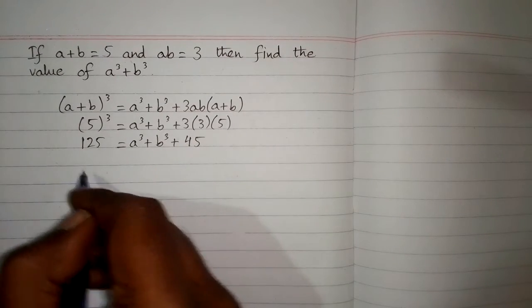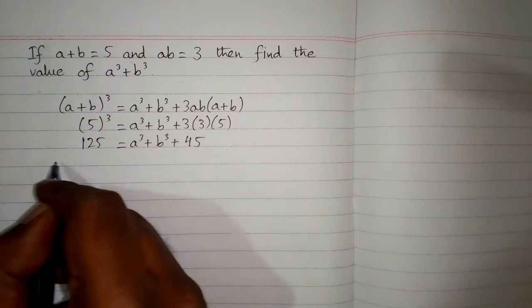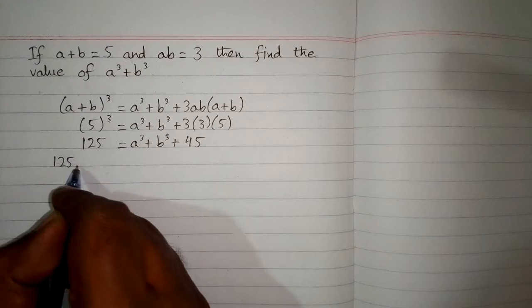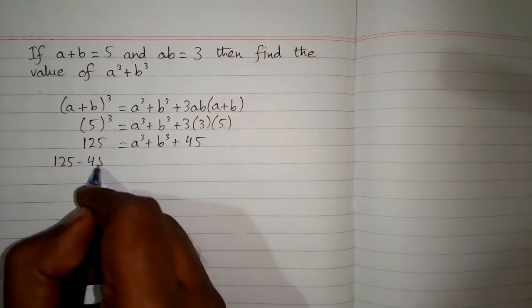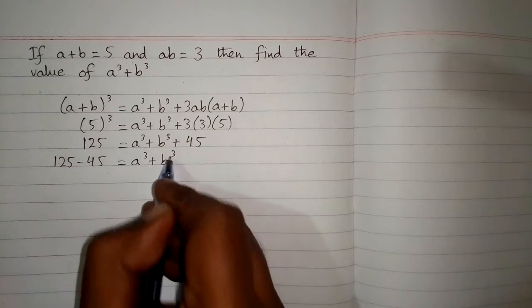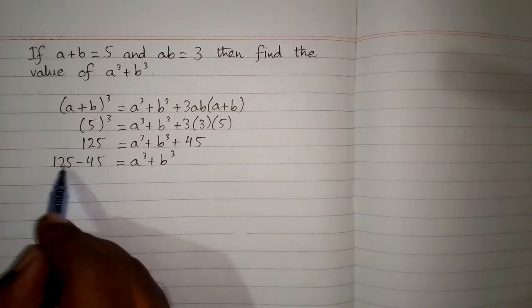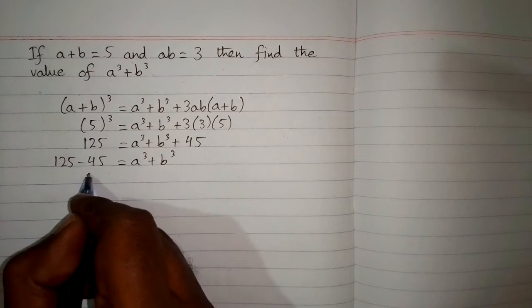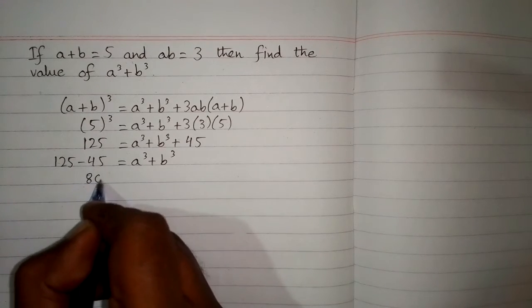So we have 45. Now we take this 45 on this side of equation, so we have 125 minus 45 is equal to a cube plus b cube, and 125 minus 45 is equal to 80.